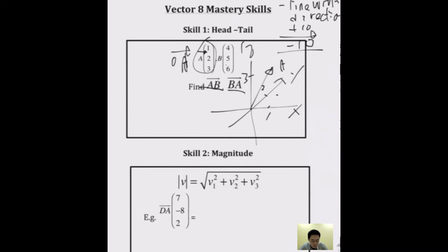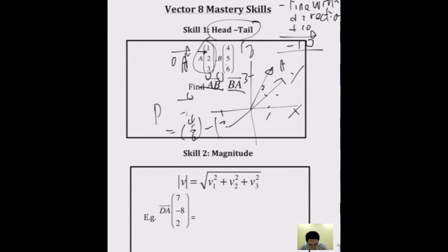The skill you need is 'head minus tail.' Look at the head of the arrow — that's B — and subtract the tail, which is A. So vector AB = B − A = (4, 5, 6) − (1, 2, 3). That gives you (3, 3, 3).